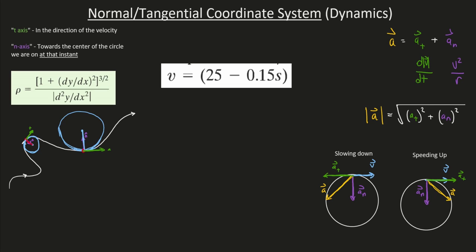Sometimes they'll give you the speed of the particle in terms of s. We prefer speed as a function of time — acceleration is the change in velocity with time, so that would simply be 2t. But here, velocity is given as a function of s, or you may be given acceleration as a function of s.